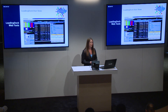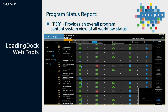Next is the Program Status Report, or PSR. It's a web tool — all of these are web tools you can access online — and it gives you an overall program system view of your workflow statuses: what's happening, where it's happening, what needs to be done. You can see what's in progress, what's completed, whether something is waiting for approval, or if there was an error. It's a quick glance across your entire station workflow so you can see where intervention is needed or confirm everything is running smoothly. You can also drill down for more detailed information within the PSR.